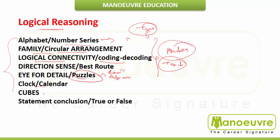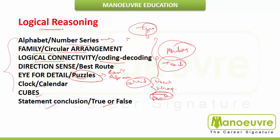Next are clocks and calendars, cubes, and statement conclusion — true or false. The correct amount of practice is very important. Don't just focus on one section like logical reasoning while neglecting English, or vice versa. Find out which is your weak subject and which is your strong area, and work accordingly. After your 12th syllabus is done, you should also concentrate on mock tests.